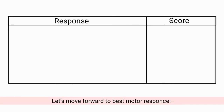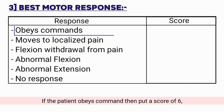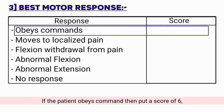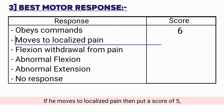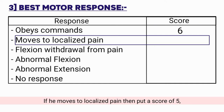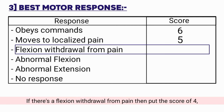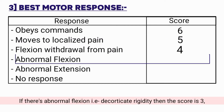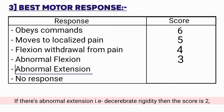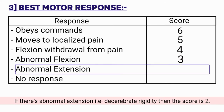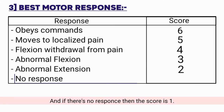Now let's move to best motor response. If the patient obeys commands, the score is 6. If he moves to localized pain, the score is 5. If there is a flexion withdrawal from pain, the score is 4. If there is abnormal flexion — that is decorticate rigidity — the score is 3. If there is abnormal extension — that is decerebrate rigidity — the score is 2. And if there is no response, the score is 1.